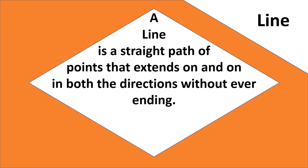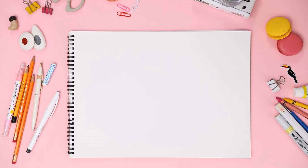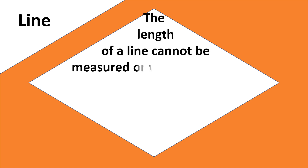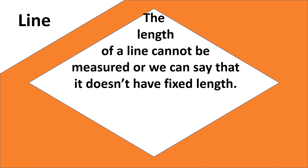A line extends on and on in both directions without ever ending. These arrowheads tell us it can be extended in both directions. Therefore we say the length of a line cannot be measured — it doesn't have a fixed length.